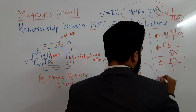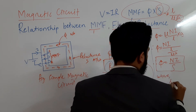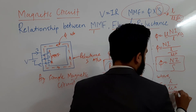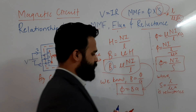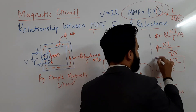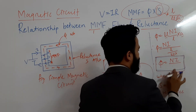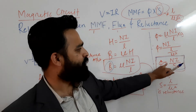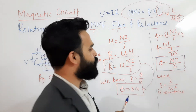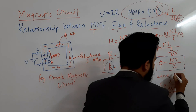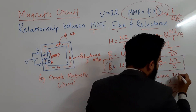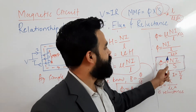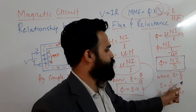So this is the derivation for the relationship between MMF, flux, and reluctance. φ = NI/S means flux equals MMF divided by reluctance. This is similar to i = V/R in an electric circuit. Flux is analogous to current, MMF is analogous to EMF, and reluctance is analogous to resistance.